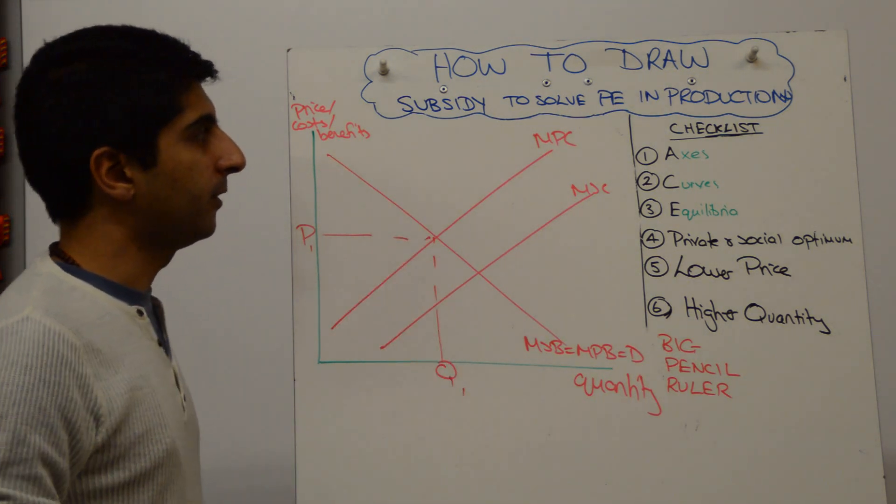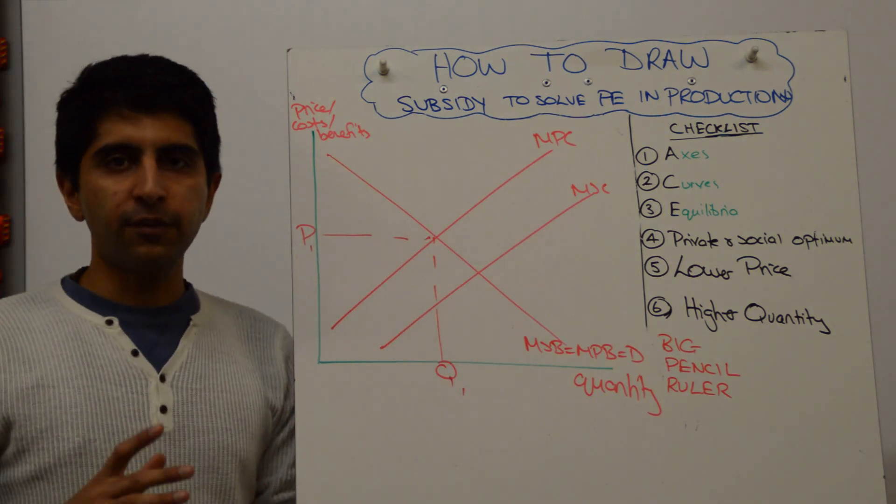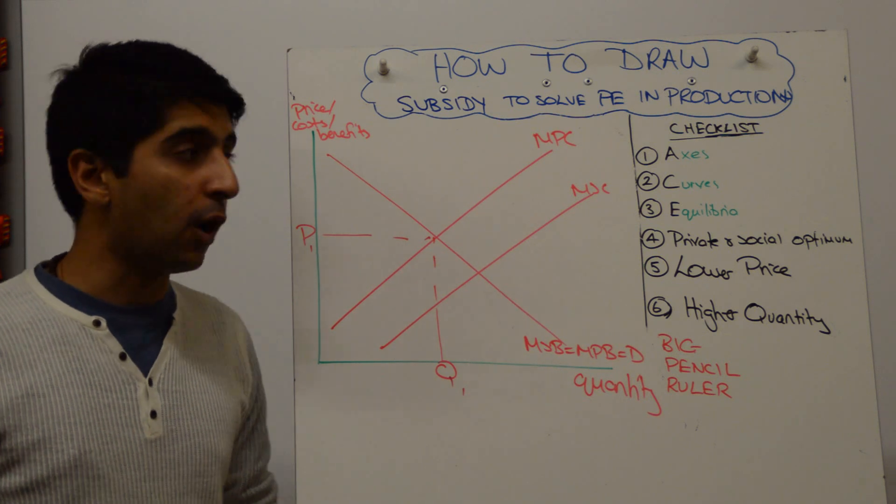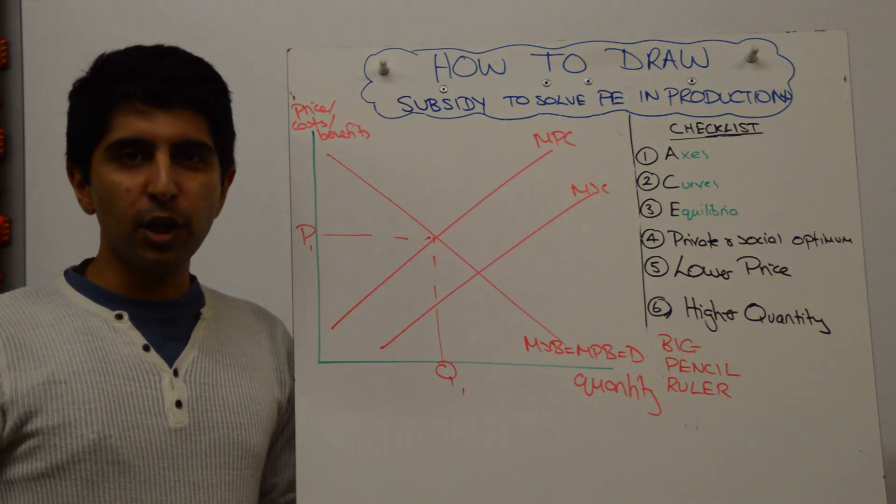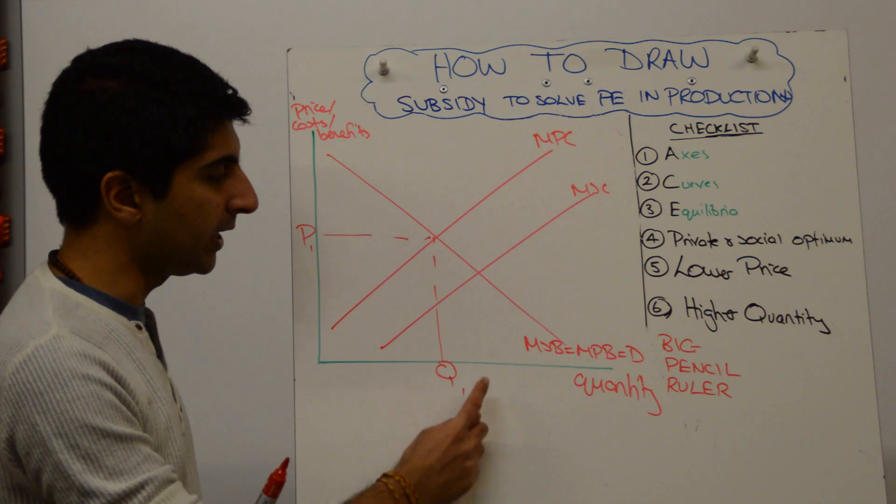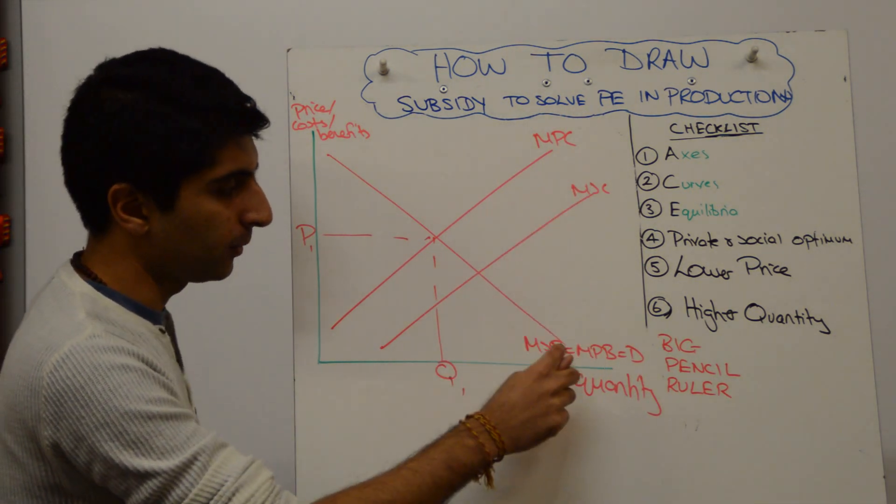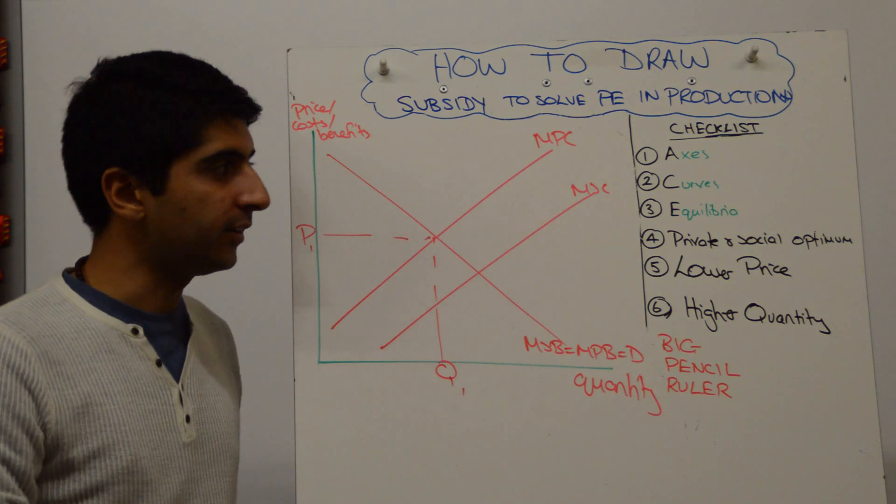Then it's the subsidy. A subsidy shifts the MPC curve downwards because costs of production for businesses are then lower. We're going to assume in this video that the subsidy is perfect, that because of the subsidy we get to the socially optimum level of quantity, which is going to be what MSC equals MSB.